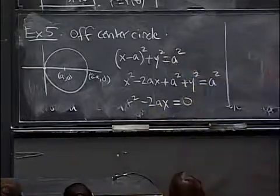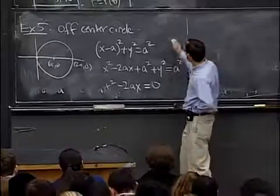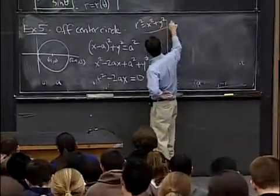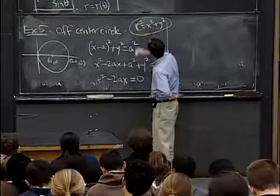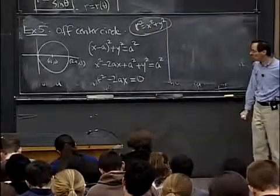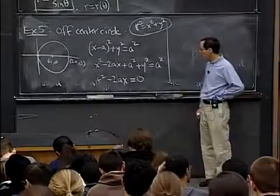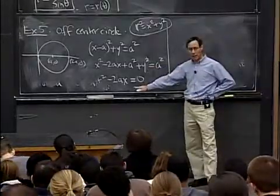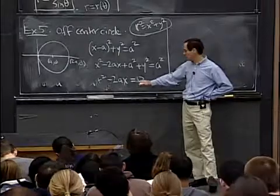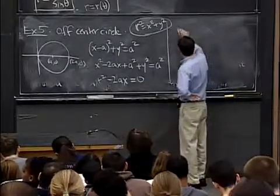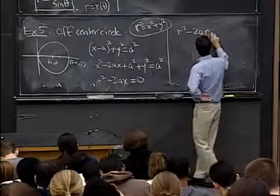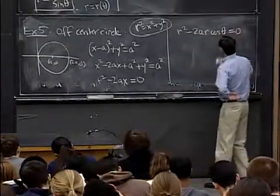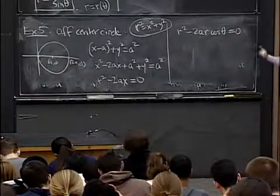The r came from the fact that r² = x² + y². I'm doing this the rapid way. You can do it by plugging in, as I said. So now that I've simplified it, I'm actually going to use that procedure. I'm going to plug in. So here I have r² - 2ar cos θ = 0. I just plugged in for x.